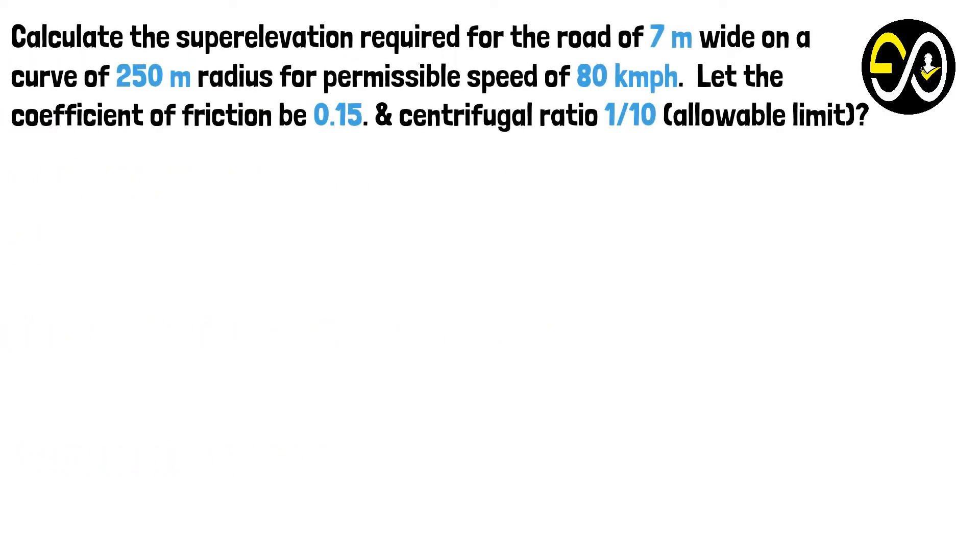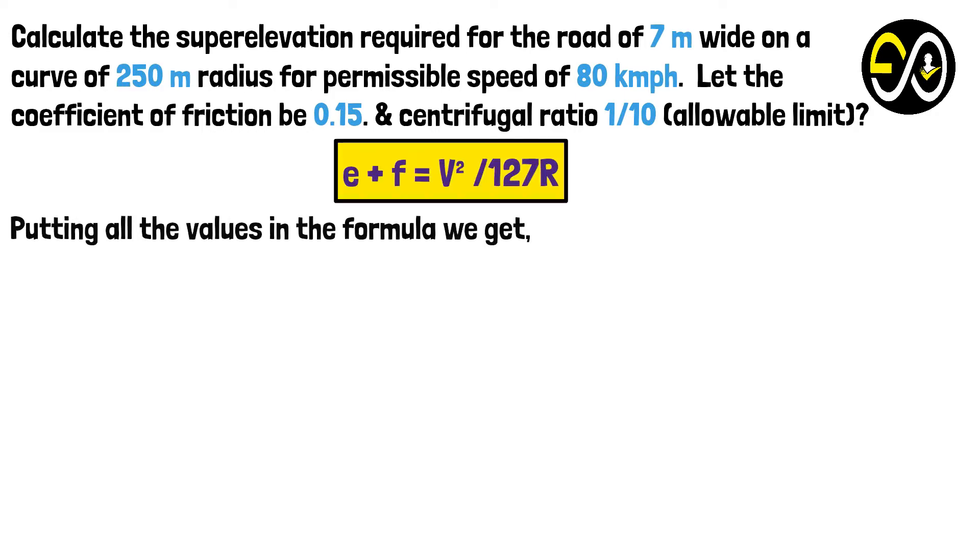Calculate the superelevation required for the road of 7 meters wide on a curve of 250 meters radius for permissible speed of 80 kmph. Let the coefficient of friction be 0.15 and centrifugal ratio 1/10. Putting all the values in the formula we get: e + 0.15 = 80²/(127 × 250) = 0.201.